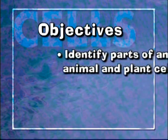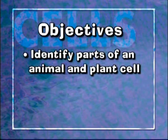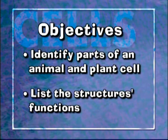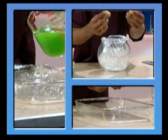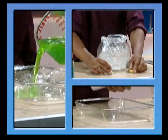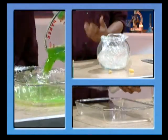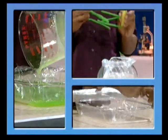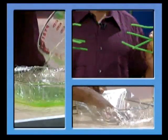At the end of this program, you'll be able to identify the basic parts of an animal cell and a plant cell. You'll also be able to list the functions of those structures in the cell. We're also going to show you how to build a cell model — a great way to see that cells are three-dimensional structures, which they certainly don't look through a microscope.